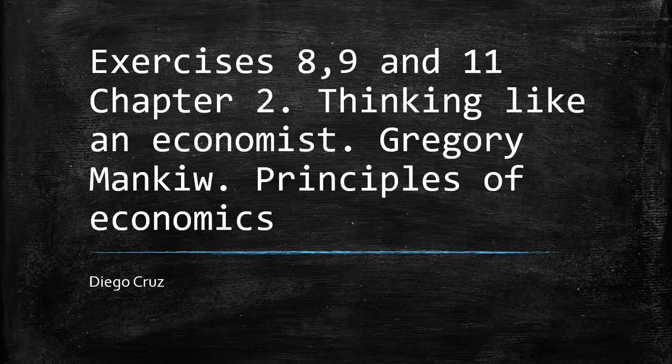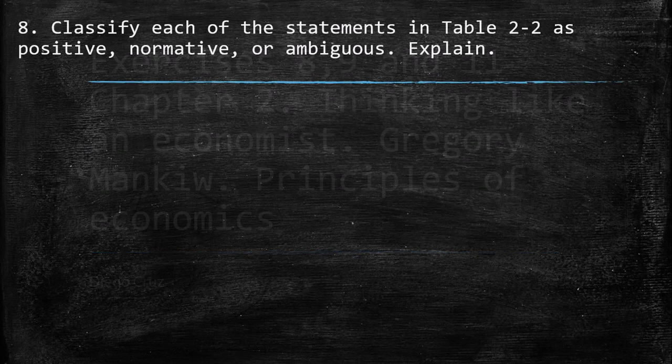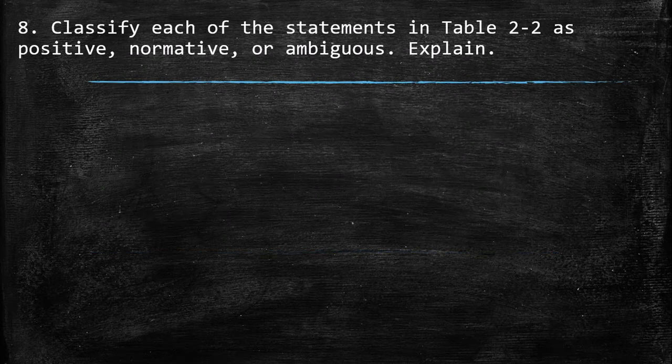Hi everyone, in this video we're going to explain exercises 8, 9, and 11, which belong to Chapter 2, Thinking like an Economist. This is from the book Principles of Economics by Gregory Mankiw. The eighth point says: classify each of the statements in table 2.2 as positive, normative, or ambiguous.